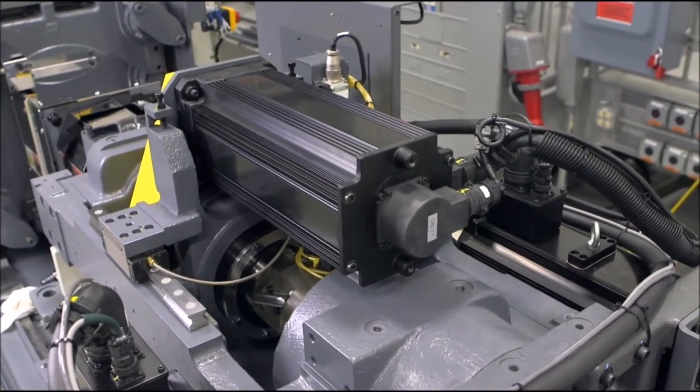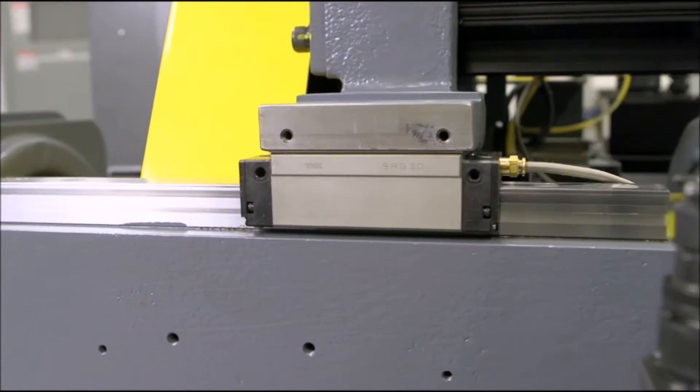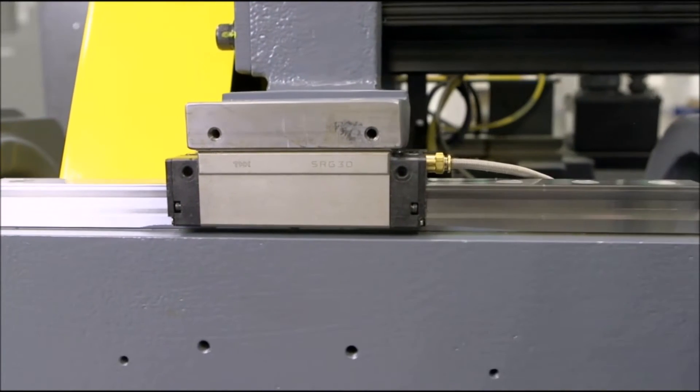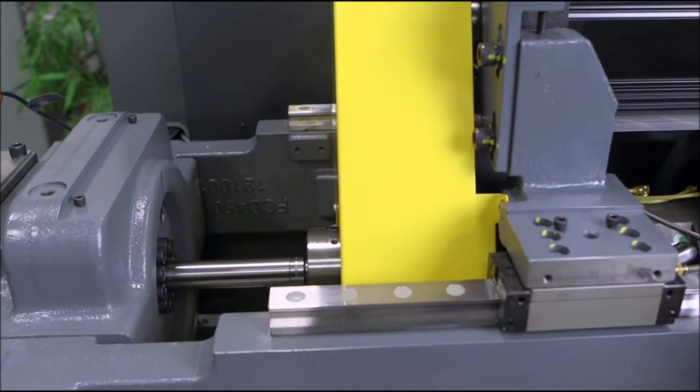On the injection side, linear guides support the entire weight of the injection unit. This allows the injection unit to move freely, allowing the injection speed and back pressure to be controlled with greater precision and accuracy than any traditionally mounted unit.